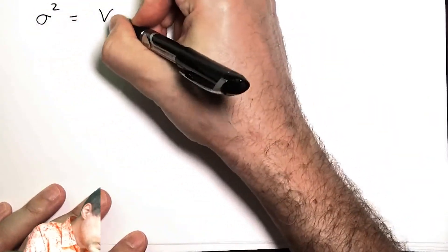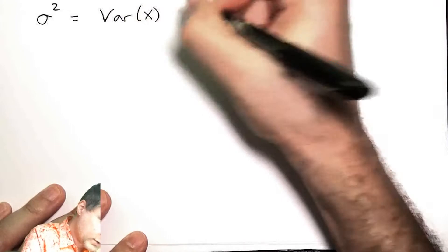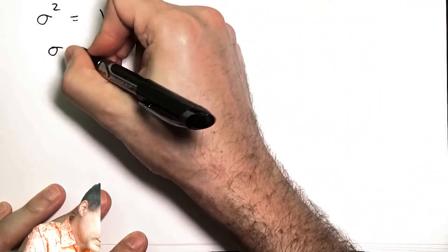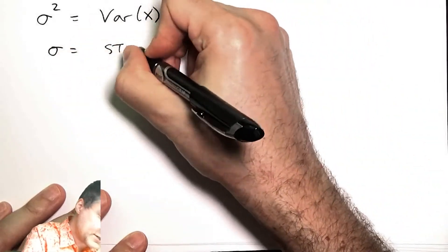Sometimes you'll see this called sigma squared. And you'll also see sigma by itself. This is called the standard deviation of X.